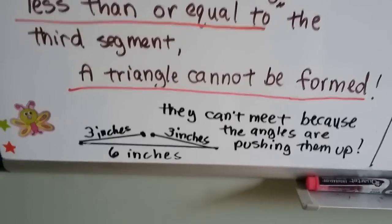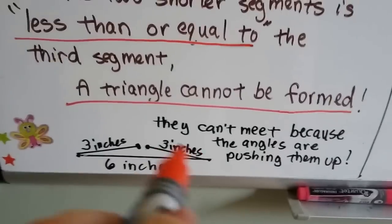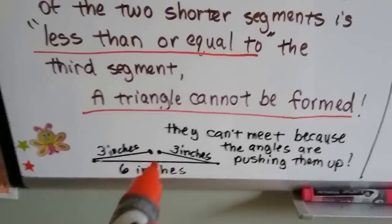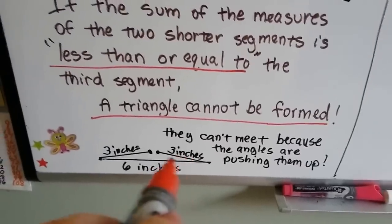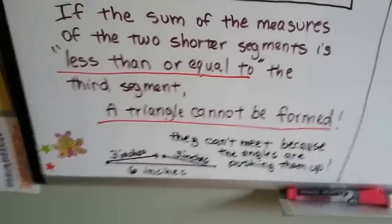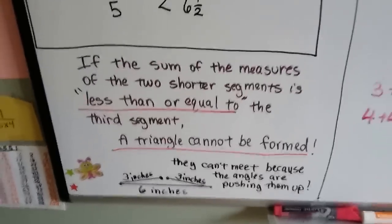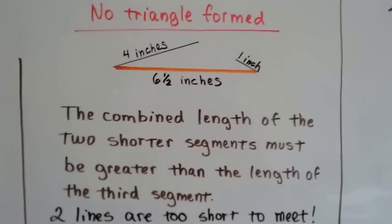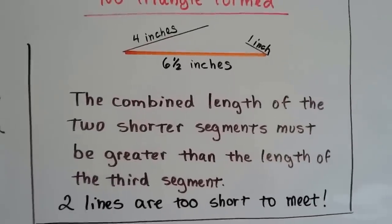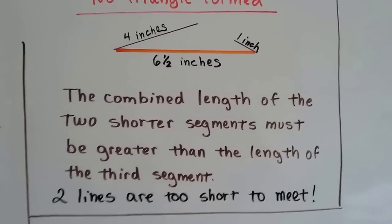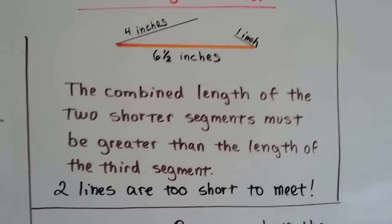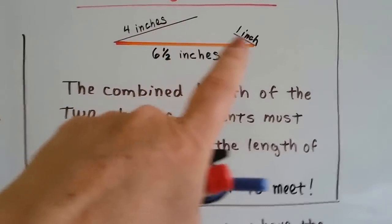They can't meet because the angles are pushing them up. Two three-inch lines would equal six inches and would never meet to form a triangle because the interior angles are pushing them up — you can't make two straight lines on top of each other. The combined lengths of the two shorter segments have to be greater than the third; these two lines are too short to meet no matter how much you lay them down.